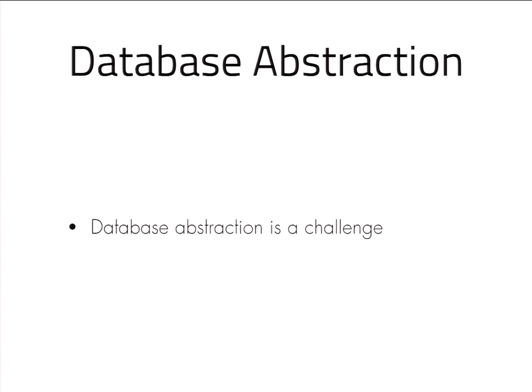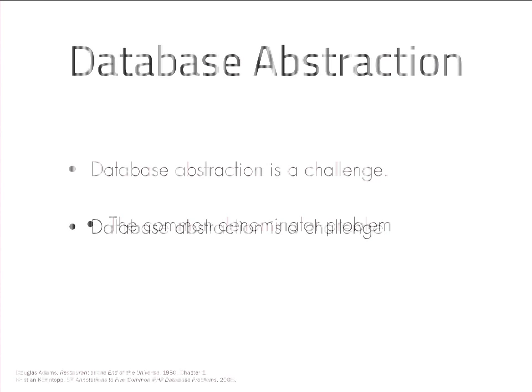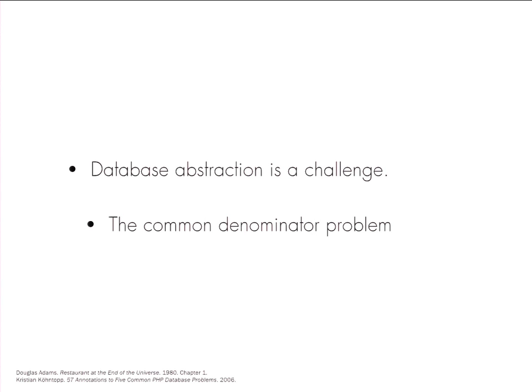A framework's database abstraction layer makes it possible for developers to choose a suitable database for applications. Each SQL implementation is uniquely powerful and implements the SQL standard in a certain way. Many database abstraction layers only implement the most common concepts — I call this the common denominator problem. We often see database abstraction layers going for a database agnostic approach, which leads to the first criticism: that database abstraction layers are no good. I jokingly say that database abstraction layers have made some people very angry and have been widely regarded as a bad move.